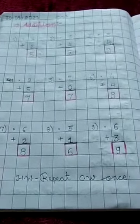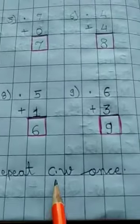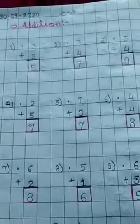Okay children. So this is your today's classwork. And just below write HW. Repeat CW once. Okay children. Now in next period we will do subtraction. Till then, bye bye.